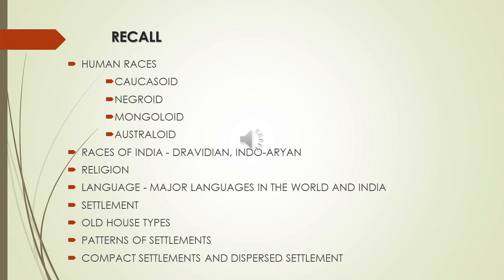In our previous class, we discussed about human races — the four major world human races: Caucasoid, Negroid, Mongoloid, and Australoid. Then the races of India — the two main races in India were Dravidian and Indo-Aryan. Mostly South Indian people were Dravidian, while North Indian peoples were Indo-Aryan. It is said that the Indo-Aryan civilization belongs to the Dravidian civilization, because of the arrival of the Aryans, who invaded and pushed the Dravidians to South India.